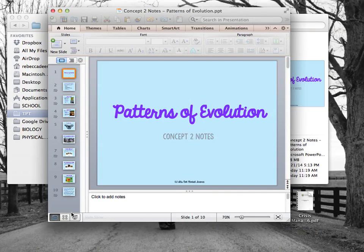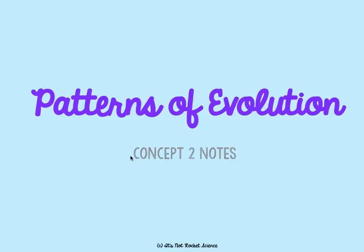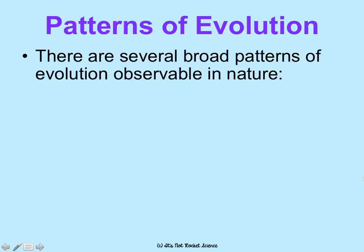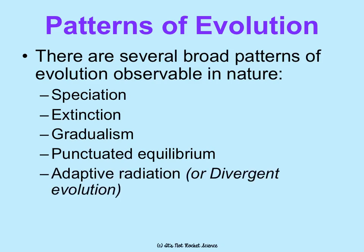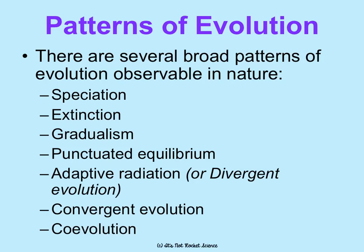This is concept two, and we're going to be talking through patterns of evolution — this is going to be the same for both CP and honors. When we look at evolution and observe it in nature, we basically see seven broad patterns: speciation, extinction, gradualism, punctuated equilibrium, adaptive radiation (also called divergent evolution), convergent evolution, and coevolution. We're going to talk through each of these seven.